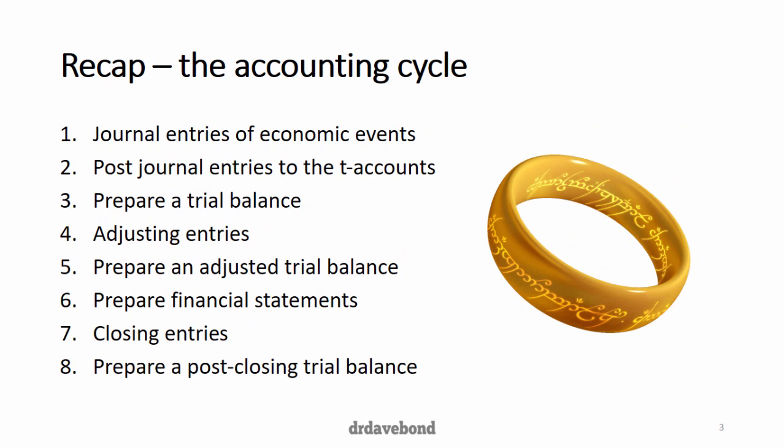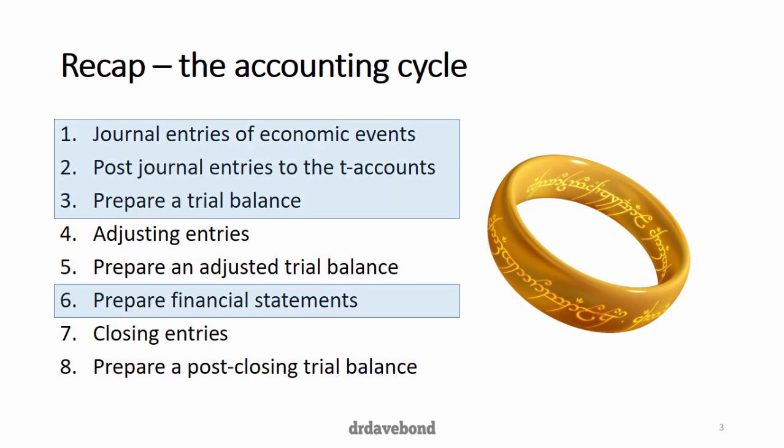So a bit of a recap. In the previous topic, we looked at the first few sections. We looked at just the basic journal entries for economic events. We then posted those to the T accounts, prepared a trial balance, and once you've done that, you can create the financial statements, although they won't necessarily be a true reflection of what's going on in the entity because they will have missed out on the adjusting entries.